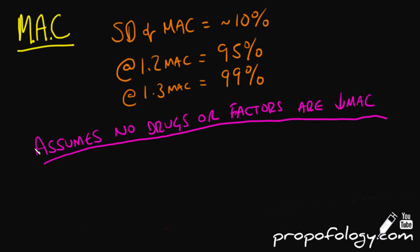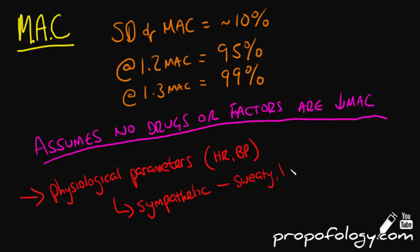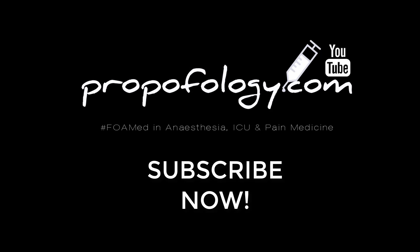Another complicating factor is the use of muscle relaxants — even if the patient was aware or could move, they may not be able to do so because they're paralysed. This is why a close eye should be kept on physiological parameters such as heart rate and blood pressure, as they can indicate if the patient is experiencing pain. You should also look at your patient and see if they're flushed, lacrimating, or sweating in their face. More information is available on www.propofology.com.